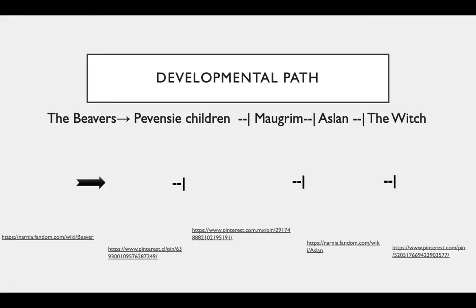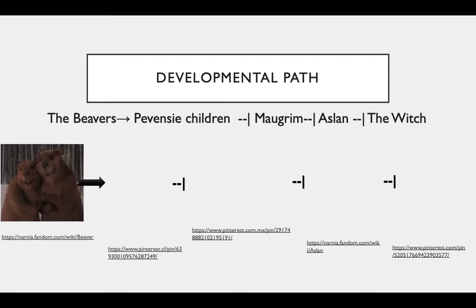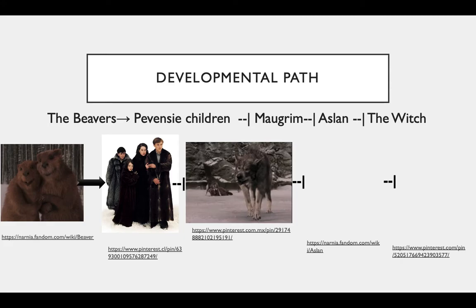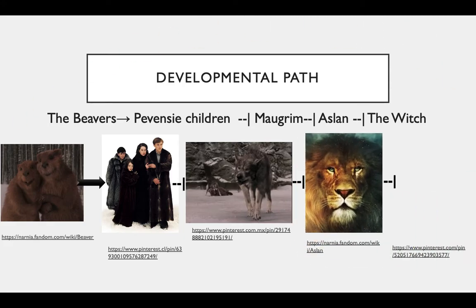So the developmental path for this, for the characters, is that the beavers activate the Pevensey children. The Pevensey children inhibit Mogrim. Mogrim inhibits Aslan, and Aslan inhibits the witch.